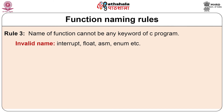Rule number 3: the name of a function cannot be any keyword of the C program. If you use a keyword as a function name, you are trying to change the meaning of the original keyword, which violates the rules. Invalid names include: int, float, asm, enum, etc. There are 32 keywords in C whose meanings are already reserved in the C library — do not use these keywords while naming functions.